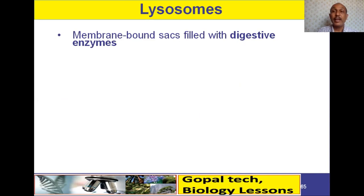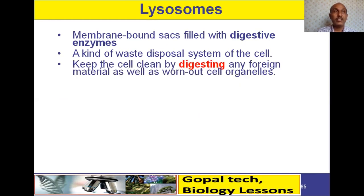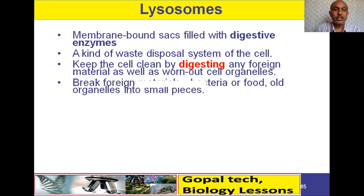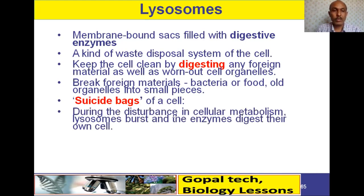Lysosomes are membrane-bound sacs filled with digestive enzymes — a kind of waste disposal system of the cell. They keep the cell clean by digesting any foreign material or even worn-out cell organelles. They break foreign materials like bacteria or food and old organelles into small pieces. Therefore, lysosomes are called the suicide bags of the cell.